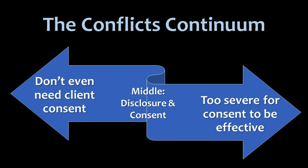Most situations are somewhere in the middle — something you should disclose to the affected clients. For example, opposing counsel is your best friend or someone you've been dating recently. You ask for their consent in writing, and then you could proceed with the representation.